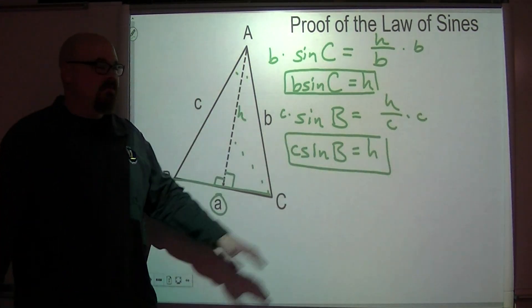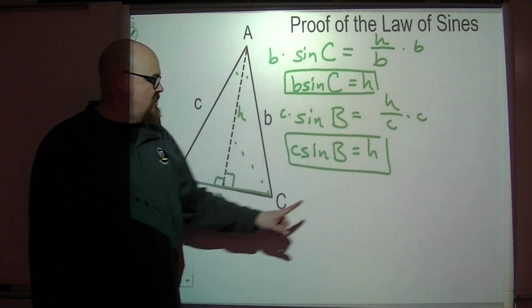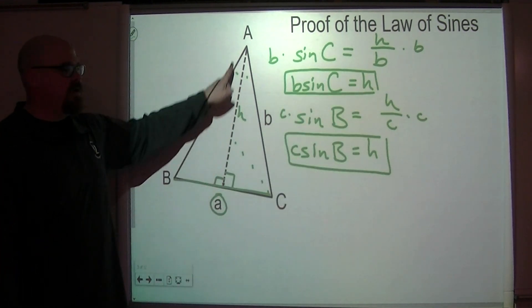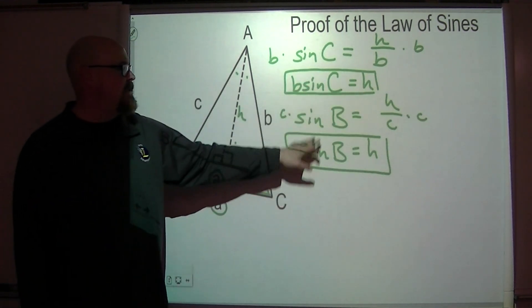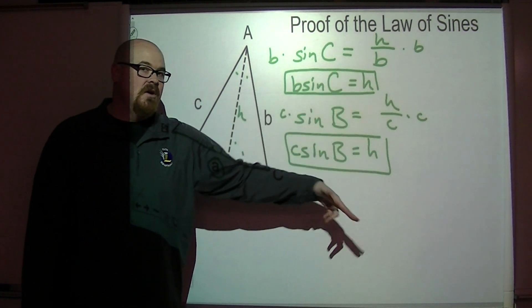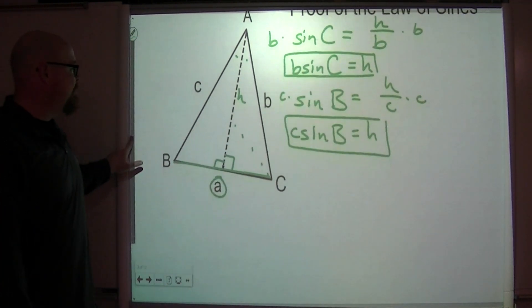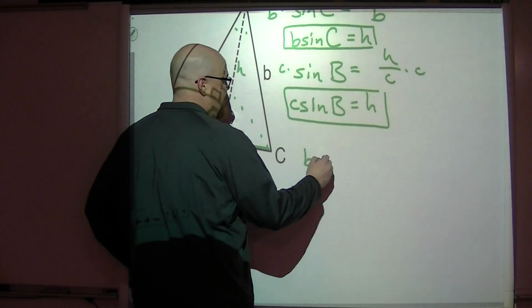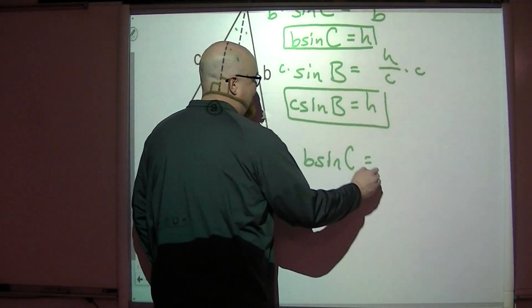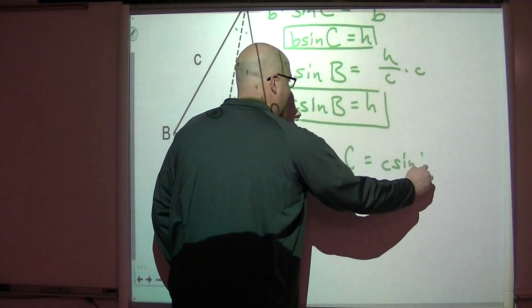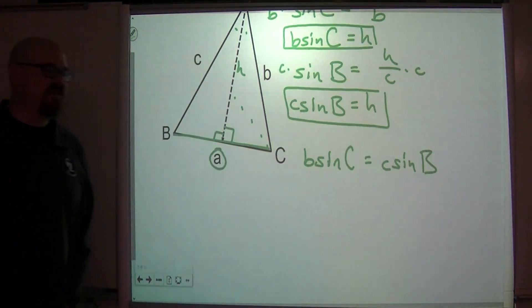Now understand that this H, it's just this one segment. So both of these statements are equal to H. By the transitive property, that means that B sine of C is equal to C sine of B. That statement is true.